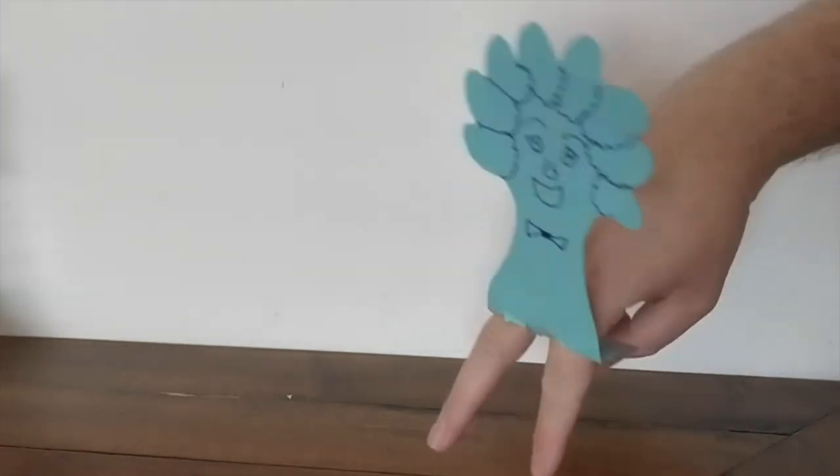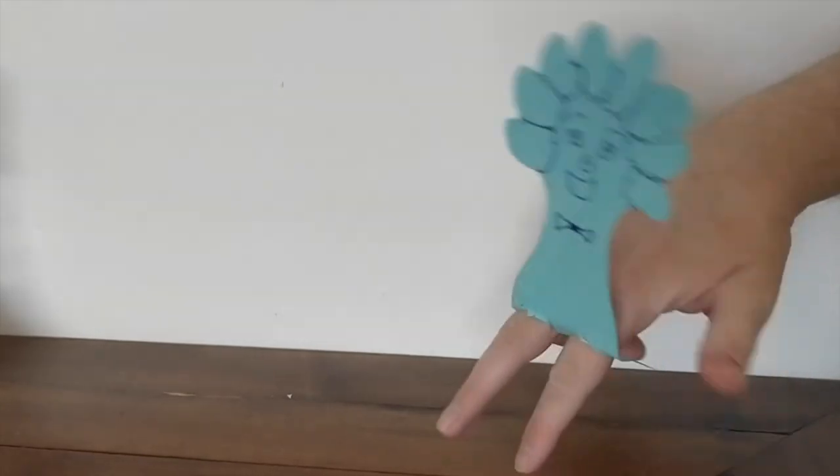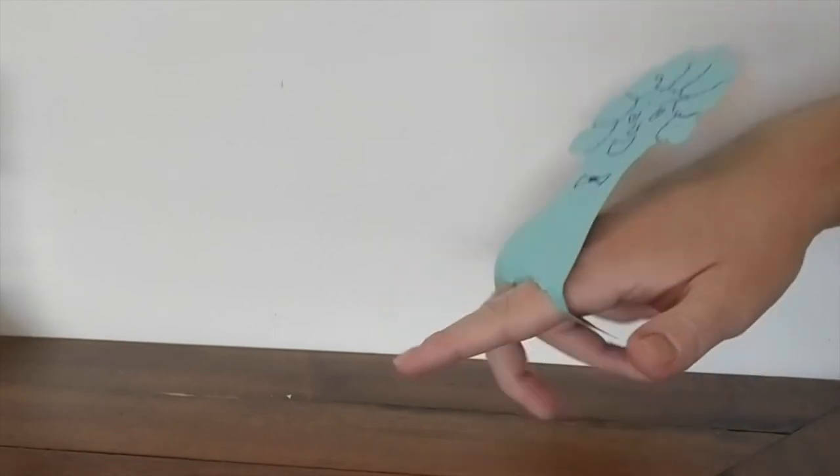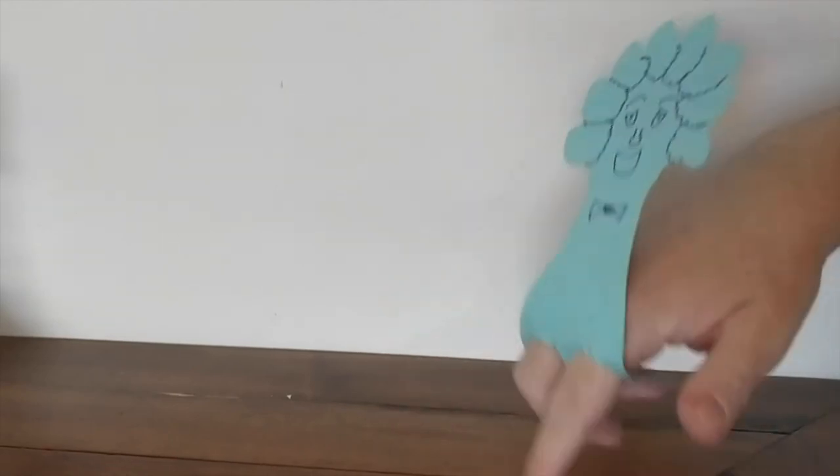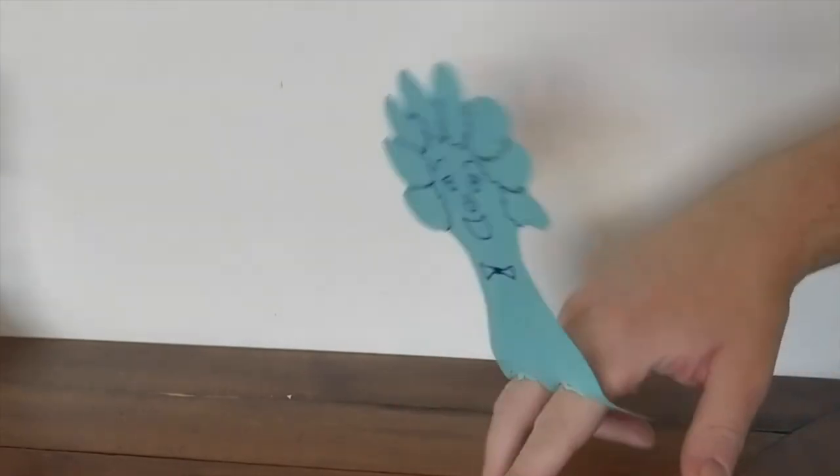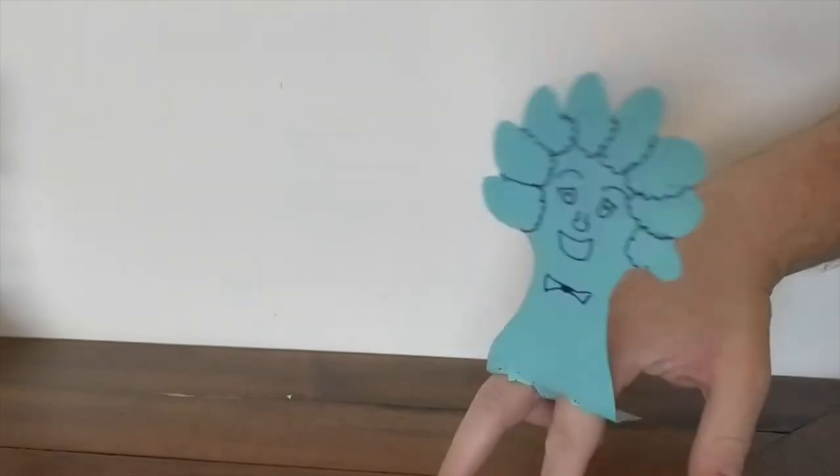So all you need to do is add your fingers and here we go your final finished puppet. Now you can design yours to look like whatever you like and you could also try out some other different fruits and vegetables. Maybe an apple, a pear or even a banana. Thank you so much for watching and I can't wait to see some of your creations too.